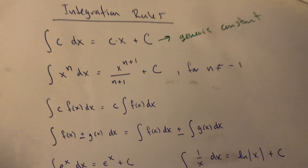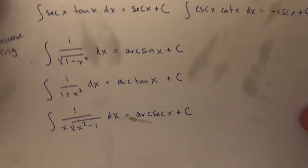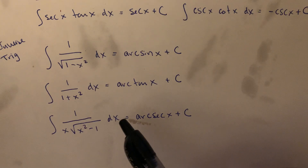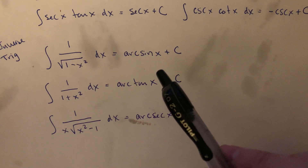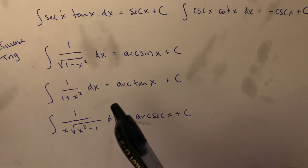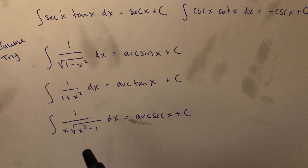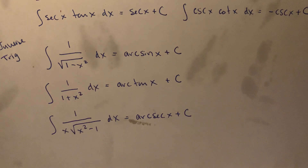We have all of our different standard integration rules. I want to briefly review some inverse trig ones. We have: one over the square root of one minus x squared gives arcsin of x; one over one plus x squared gives arctan of x; one over x times the square root of x squared minus one gives arcsec of x — all plus C.